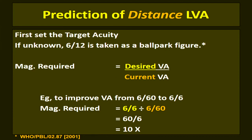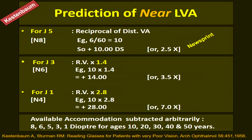You can also predict the required magnification more precisely. Set a target acuity — for instance, 6/6 — or use 6/12 as a ballpark figure. The magnification required equals the desired acuity divided by the current visual acuity. So to improve vision from 6/60 to 6/6, the magnification required would be 6/6 divided by 6/60, which equals 10x. You can then go one step up or down depending on the patient's demand and visual comfort.